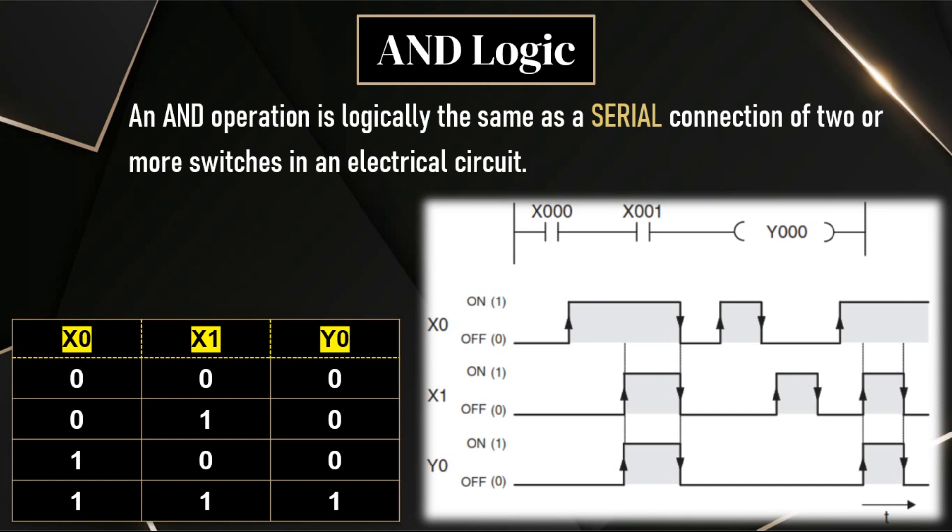Now we discuss the basic logic gates using ladder logic. The first one is AND logic. We already know what is AND logic. For example, the AND logic has two inputs x0 and x1 and the output is y0.